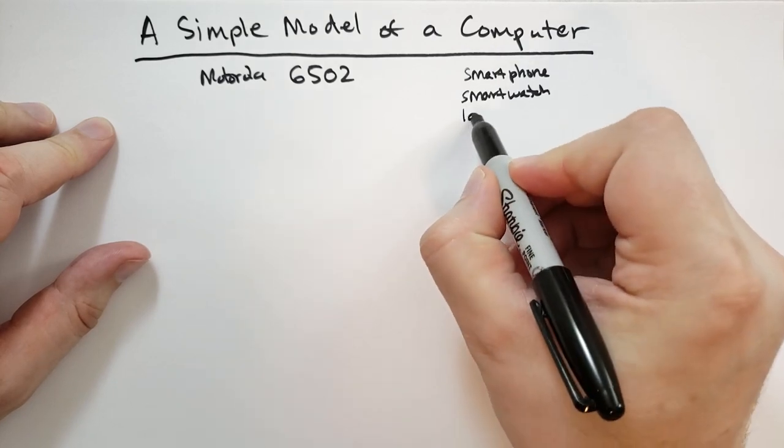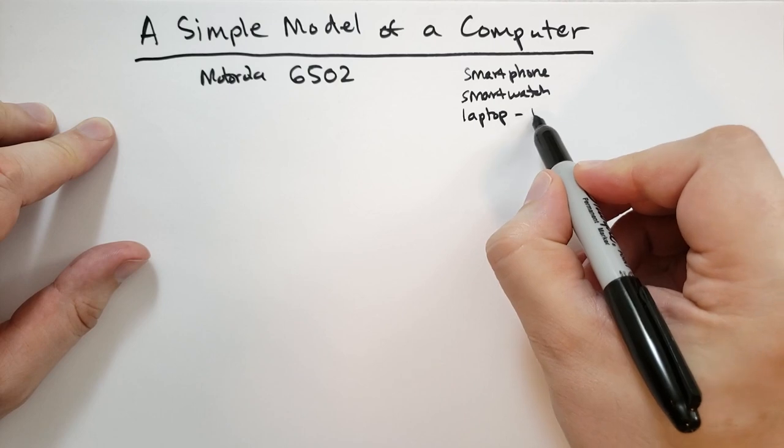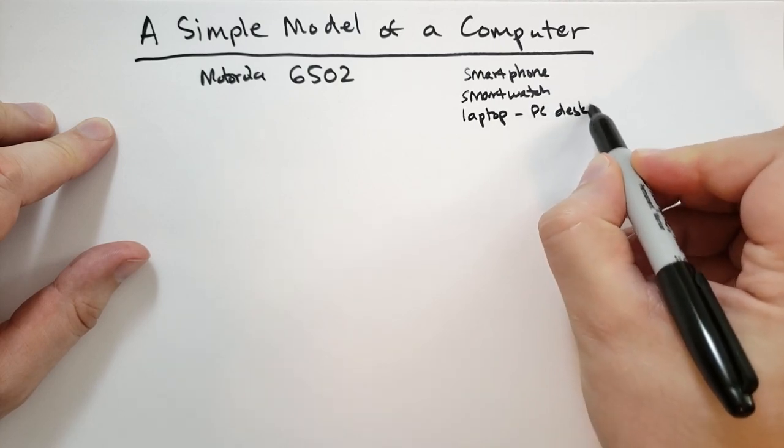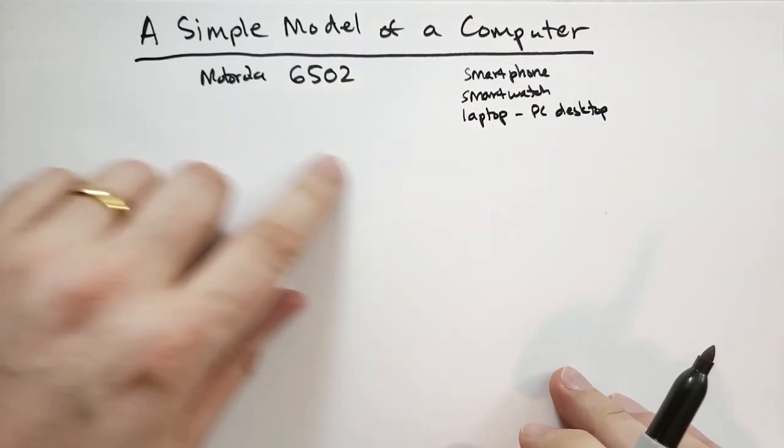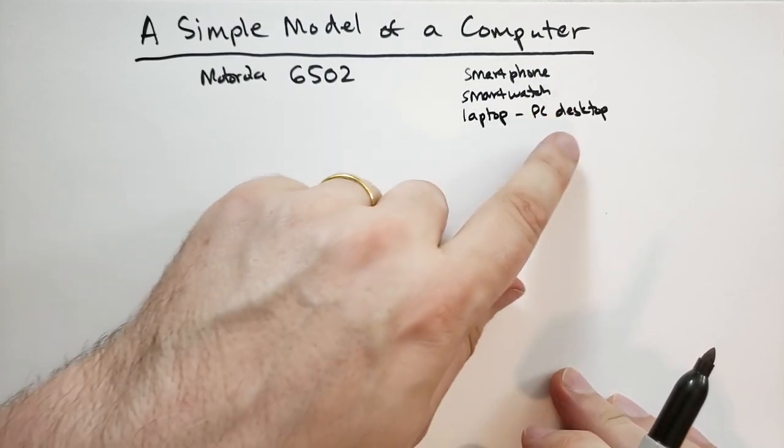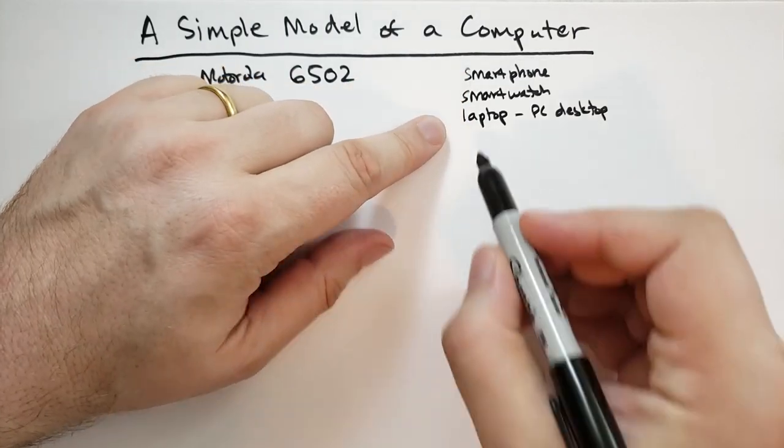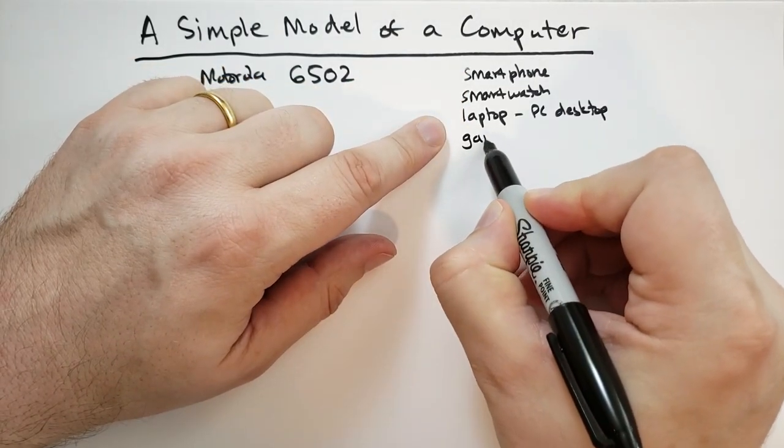Then we also, if we go up the chain, we might have a laptop, or you might have a PC desktop or some kind of desktop computer. And these are also computers, obviously computers. My kids get confused because they think when I say computer, I'm only meaning this thing. No, I mean any computing device. And of course, you have your gaming consoles. Those are also computers.